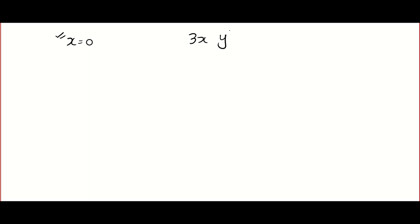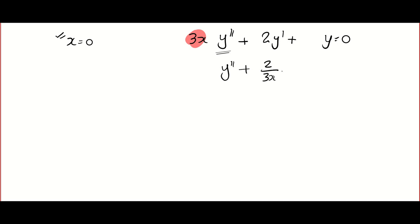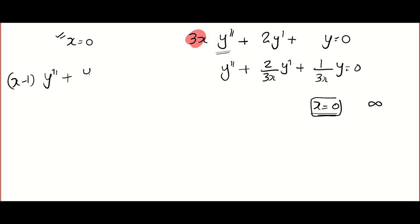I have an equation here: 3x y'' + 2y' + y = 0. Now look at this — you have done many problems in power series but may not have seen a problem like this. Along with the highest order term we have 3x. If I divide throughout by 3x, it is obvious that 3x comes in the denominator, and if I plug in x = 0 we will get infinity. So x = 0 is called a singular point.